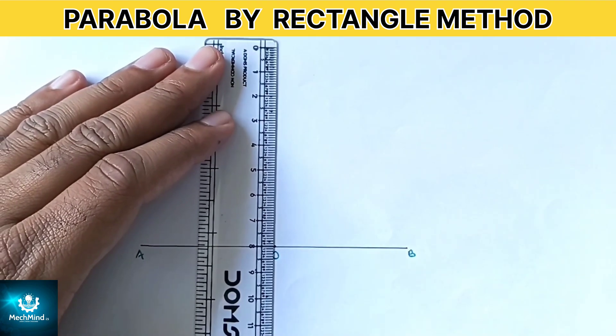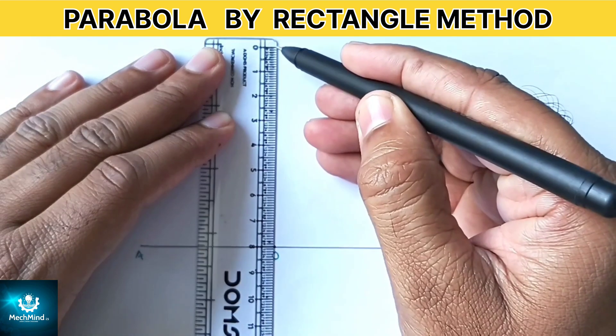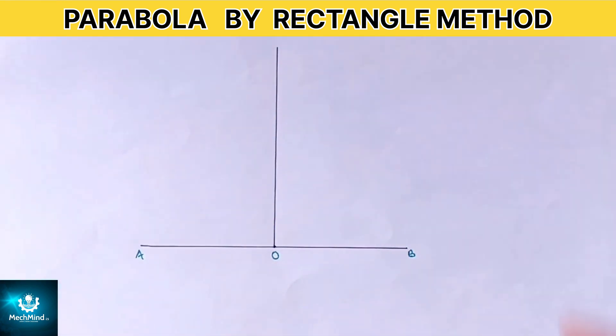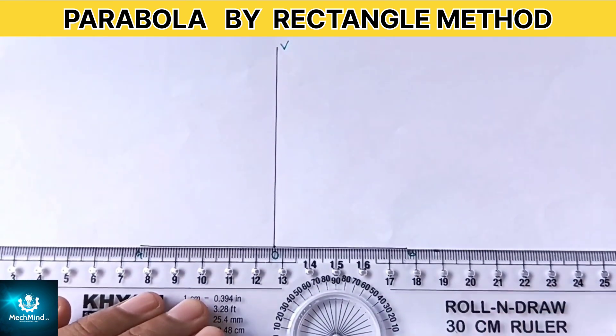From the midpoint of line AB, draw a vertical line upward which represents the axis equal to 80 mm. Label the endpoint as V.